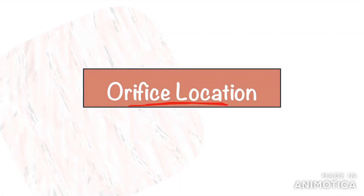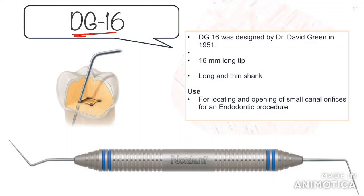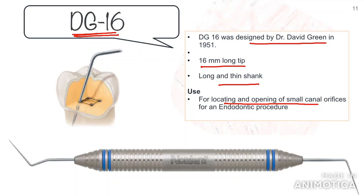Moving on, we come to orifice location. Once the pulp tissue is completely removed and the chamber is clean, the pulpal floor is exposed. The next step involves locating the orifices, which is more challenging in multi-rooted teeth. One instrument you need in your armamentarium is the DG-16. This was designed by David Green and has a 16 mm long tip, hence the name. It was designed to overcome difficulties encountered while exploring root canal orifices with a regular straight probe or cowhorn explorer, especially in posterior teeth. It has a long, thin shank which helps to easily identify canal orifices and determine canal angulation.